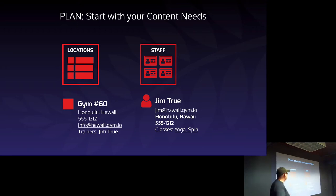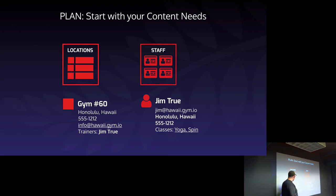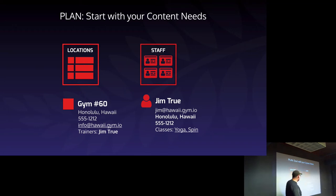Starting with your content needs — here's a wireframe. This is one of your gyms at a location, with the gym's city, phone number, email address, and trainers. There's a staff list that shows the trainer, their email address, what locations they're at, phone number, et cetera. You can see right away that information is shared across both views.